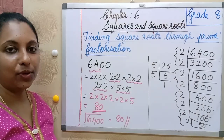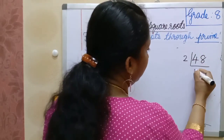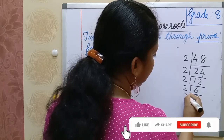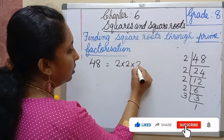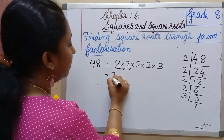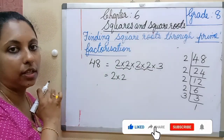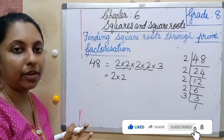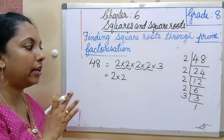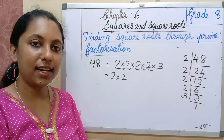Next, let's check 48. Factorizing: 48 = 2 × 2 × 2 × 2 × 3. Looking at the pairs: we get one pair of 2s, another pair of 2s, but only a single 3 left with no pair. So 48 is not a perfect square and we cannot find its exact square root. This way we can determine whether any number is a perfect square or not using prime factorization. Hope you all understood — we'll continue in the next class.